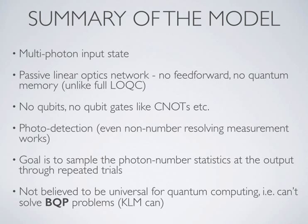The goal of the problem is to sample the photon number statistics at the output to the highest degree of accuracy, by repeating the experiment over and over again. I'll emphasise that this model is not believed to be universal for quantum computing — we can't solve BQP-complete problems. KLM can; this can't. So it implements a subset of quantum computing, but that subset is still a computationally hard problem.